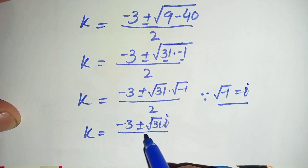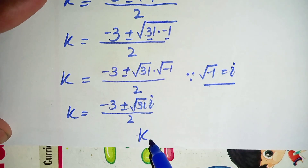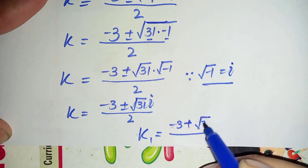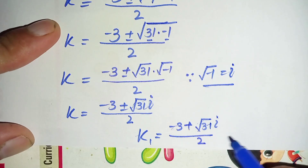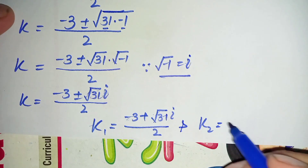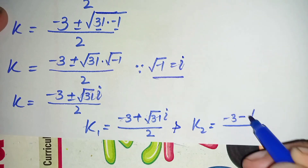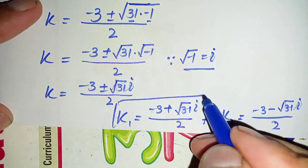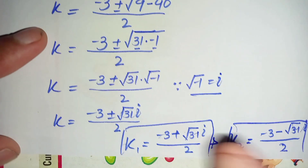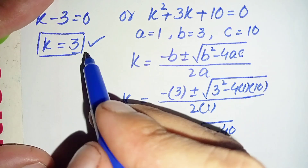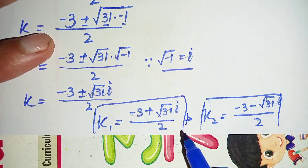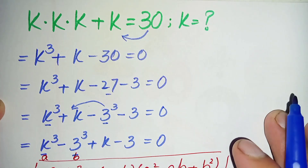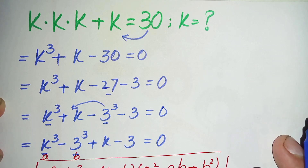This gives k equals minus 3 plus or minus square root of 31 times i, divided by 2. So we have two complex values: k₁ equals minus 3 plus root 31 iota, divided by 2; and k₂ equals minus 3 minus root 31 iota, divided by 2. These two roots are complex, not real. Finally, we have three solutions: k equals 3 is the real solution, and the other two are complex solutions of this nice algebra math problem. If you like this video, don't forget to subscribe to my channel. Thanks for watching.